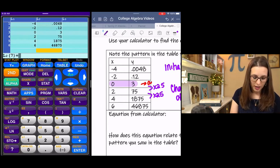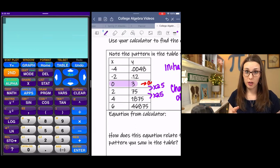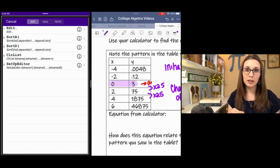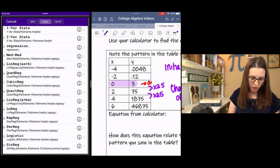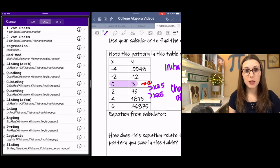Then I'm going to go to Second, Mode, to Quit. That brings me back to the home screen. And I'm going to go back into Stat. And now instead of editing a list, I'm going to go into the Calculate menu. And if you scroll down, you can see ExpReg, Exponential Regression. That's the one I'm going to choose.